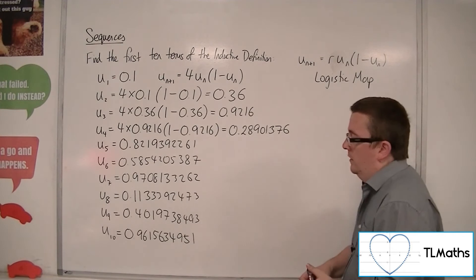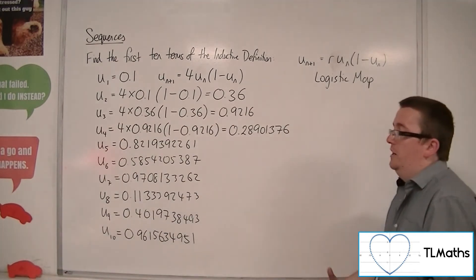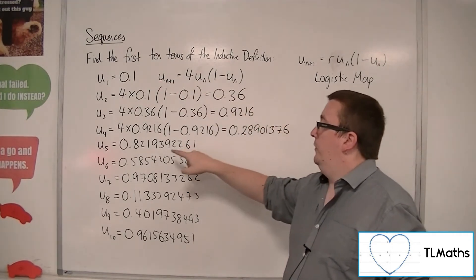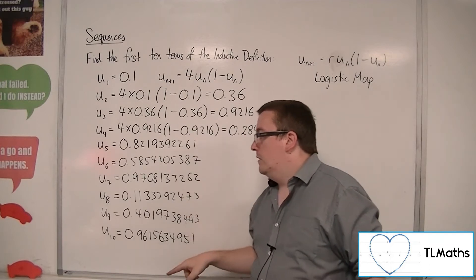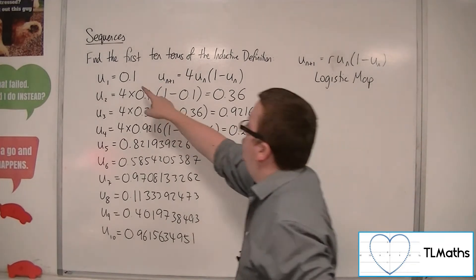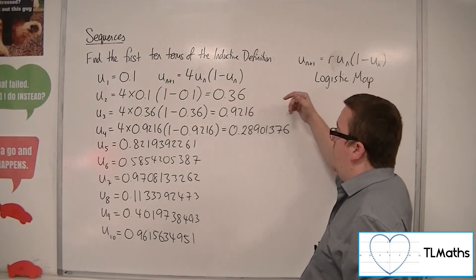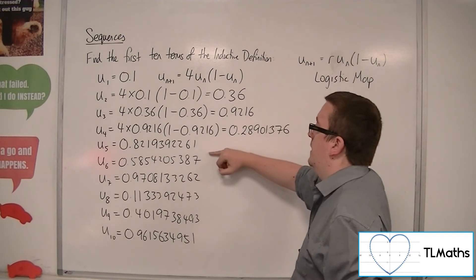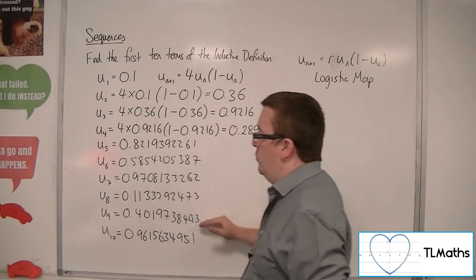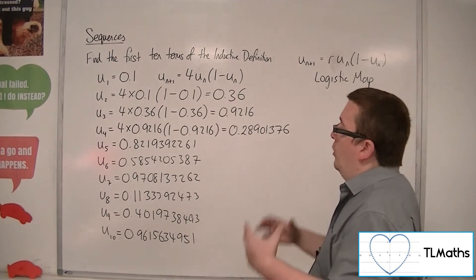Now this is the first 10 terms of this sequence. And what you can see is that these numbers are kind of jumping around all over the place. They seem to kind of increase up to a certain number, a certain part, and then they go back to the beginning again. They get a certain way and then back again. They get a certain way and then back again.